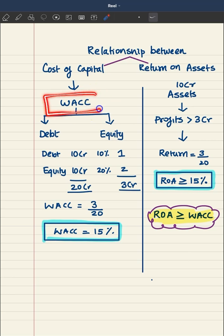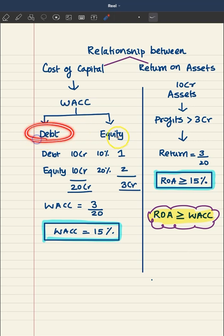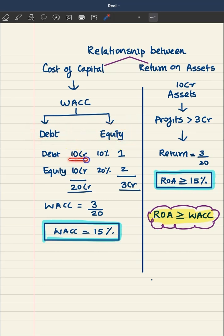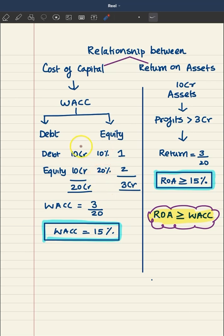We also call it WACC, which stands for Weighted Average Cost of Capital. Let's take an example. Say a business raises funds from debt and equity — debt is 10 crore and equity is 10 crore. Debt is raised at a cost of 10%, and equity is raised at 20%.